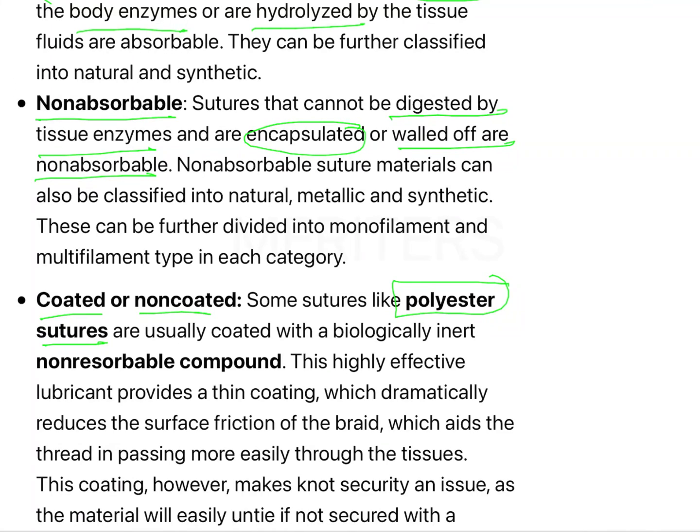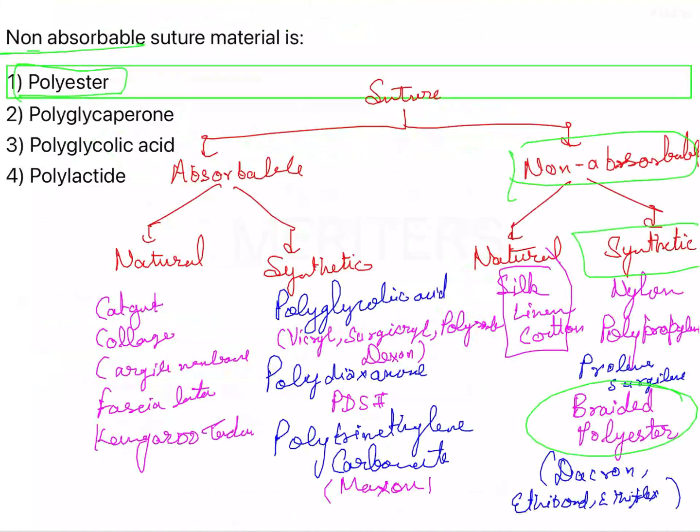One example is polyester sutures, which belong to the non-absorbable category. Coming back to the question, non-absorbable suture material is polyester.